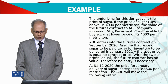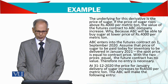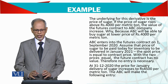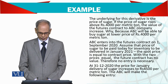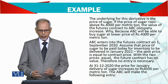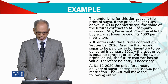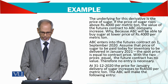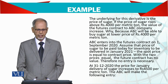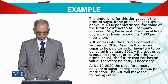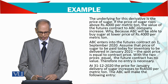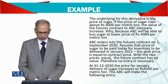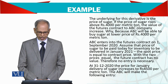ABC will be able to buy sugar at Rs. 4,000 per metric ton even if the market price is higher. If the spot price equals the contract price of Rs. 4,000, then with the two prices equal, the futures contract has no value.